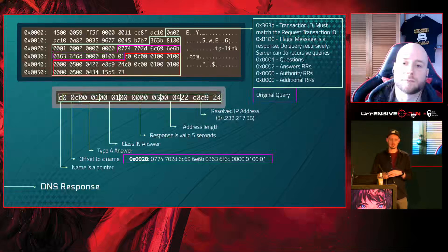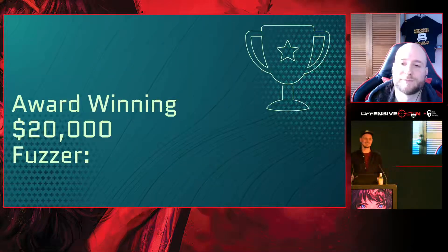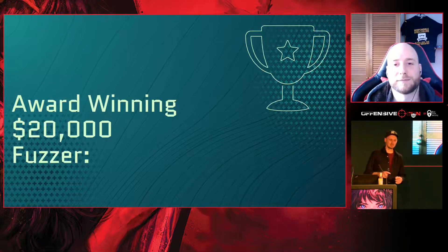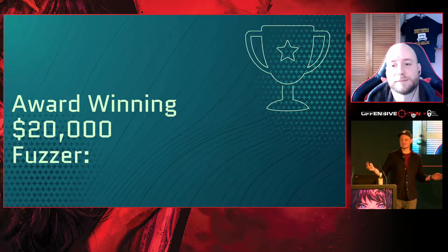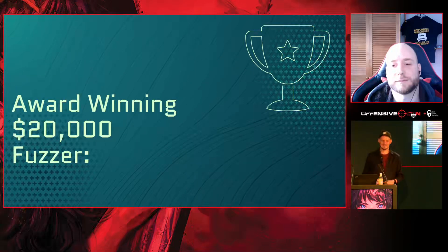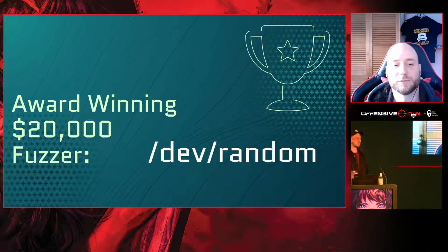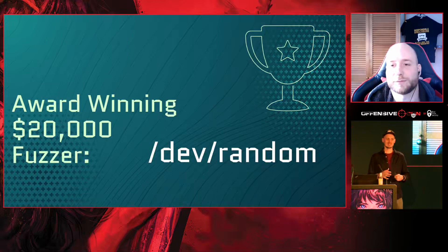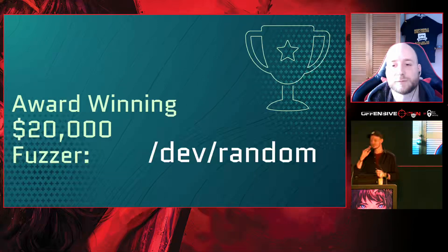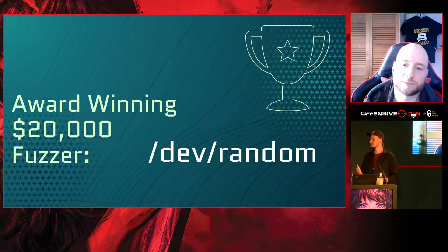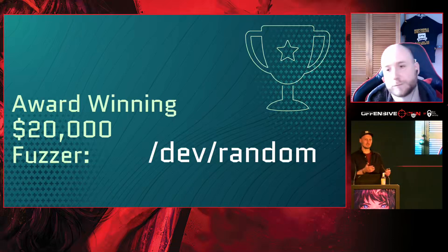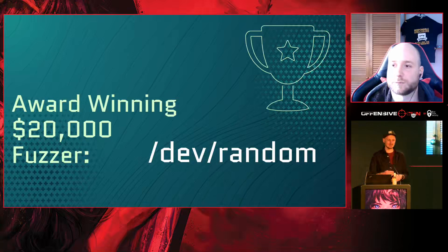Since DNS is a structured protocol, fuzzing makes sense to find vulnerabilities. We used our favorite fuzzer — boofuzz — to find the bug. When starting on a new target, we send garbage data and watch the console for crashes to get an initial indication of where to focus. We sent random data and saw a crash — beautiful.